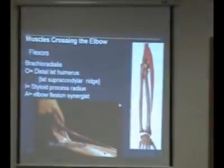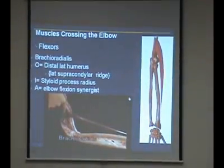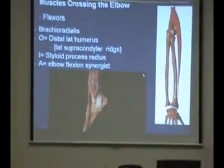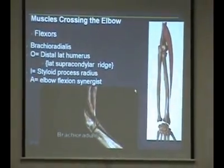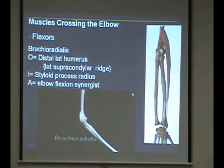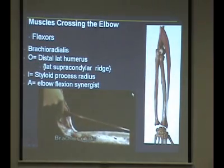The last of the three elbow flexors is brachioradialis. It arises halfway up the humerus, just below the deltoid tuberosity, and is inserted all the way down on the distal radius. Brachioradialis is an efficient flexor of the elbow whether the forearm is pronated or supinated.